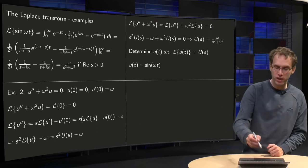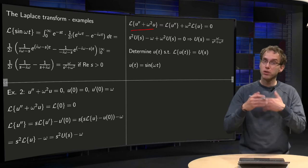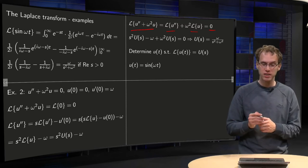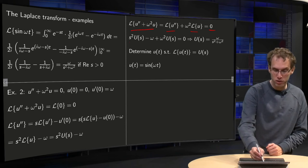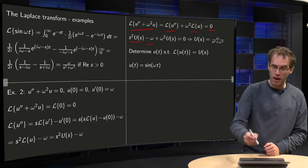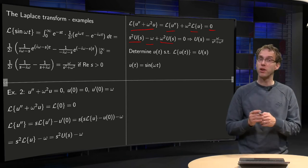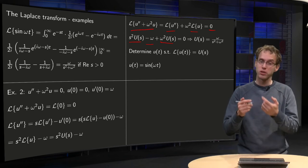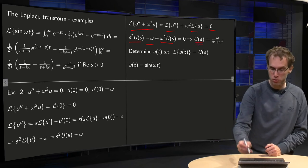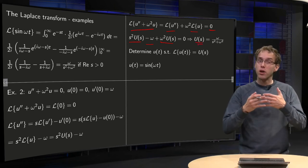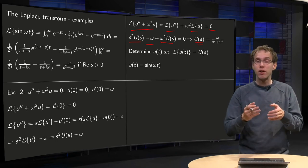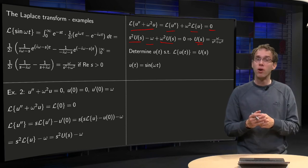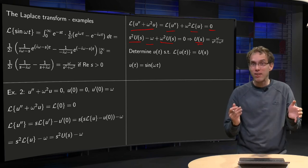For the full equation, since the Laplace transform is a linear operation, we split it and set equal to zero. We found the Laplace transform of u'' equals s²U(s) minus ω, and we add ω²U(s) equals zero. We can then solve for U(s) — it is now an algebraic equation: (s² + ω²)U(s) = ω, which is trivial to solve. So instead of solving a differential equation, we only had to solve an algebraic equation.